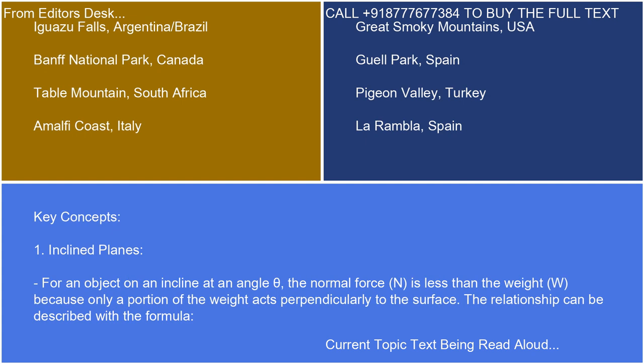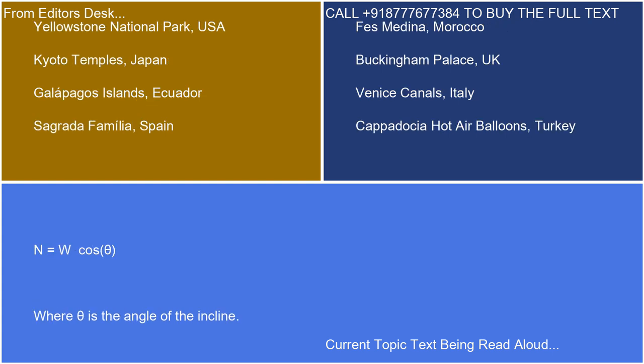Key Concept 1 — Inclined Planes: For an object on an incline at an angle θ, the normal force, N, is less than the weight, W, because only a portion of the weight acts perpendicularly to the surface. The relationship can be described with the formula N = W cos θ, where θ is the angle of the incline.